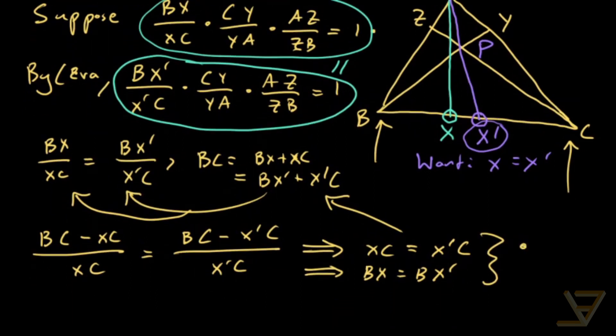So that means that X equals X prime and we know that the Cevians are concurrent. So that proves the converse of Ceva's theorem.